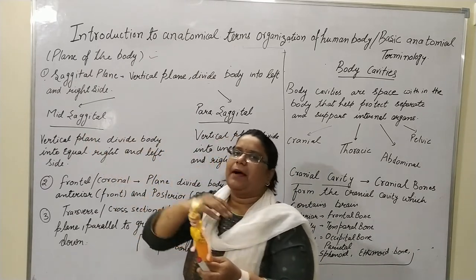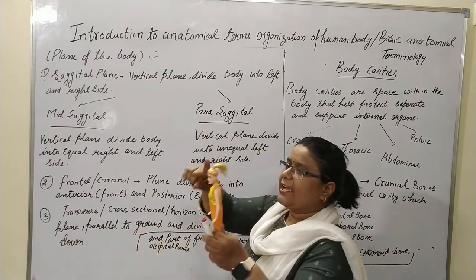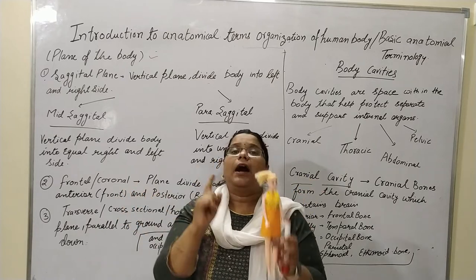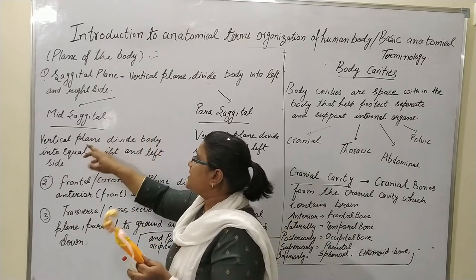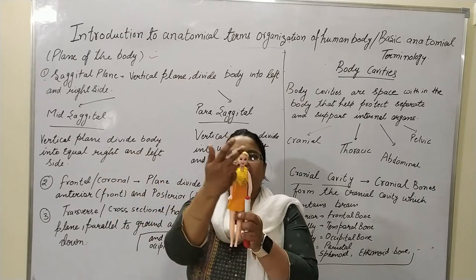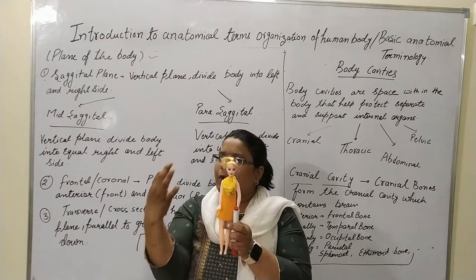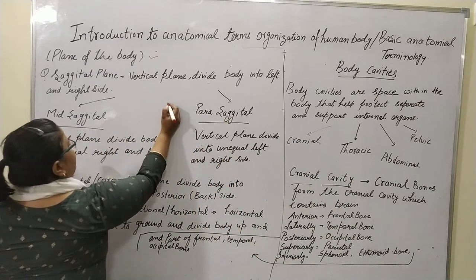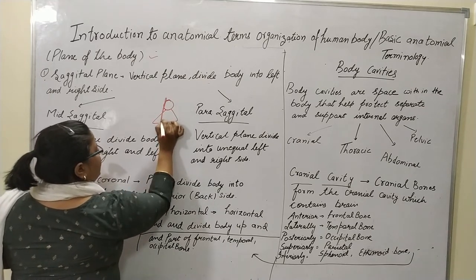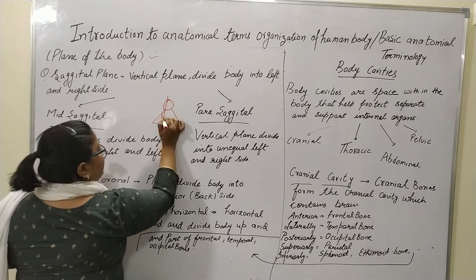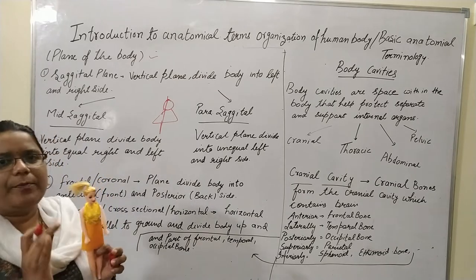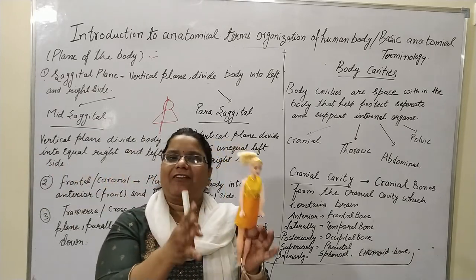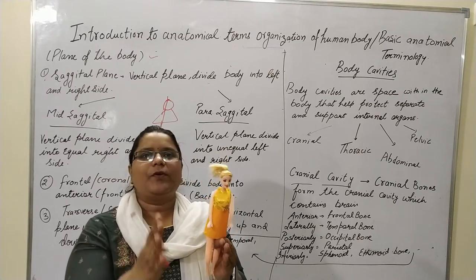Now, in the sagittal plane there are two planes: mid-sagittal and parasagittal. The mid-sagittal plane divides the body equally into left and right. Parasagittal means that the plane is parallel to the sagittal plane but it doesn't divide the body into equal left and right. It is still a vertical plane, but it produces unequal left and right portions. That plane is known as the parasagittal plane.